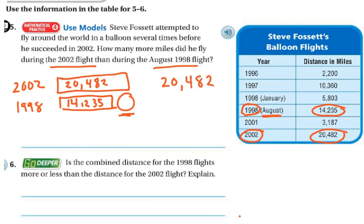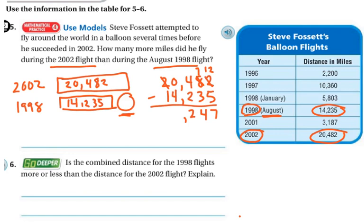So now I'm going to solve it: 20,482 minus 14,235. Please remember to line up your numbers — ones, tens, hundreds, thousands, ten thousands. I can't subtract 5 from 2, so I regroup: 12 minus 5 is 7. Then 7 minus 3 is 4. Four minus 2 is 2. I have 0 thousands and can't take 4 from 0, so I regroup my ten thousands: 10 minus 4 is 6, and 1 minus 1 is 0. So it's 6,247 miles — that's how many more miles he traveled.